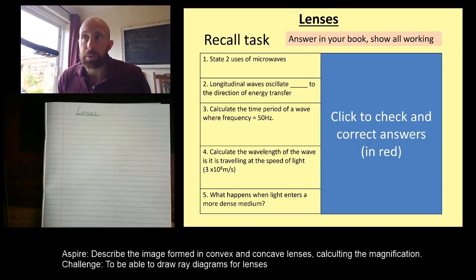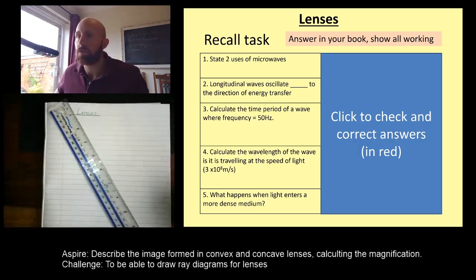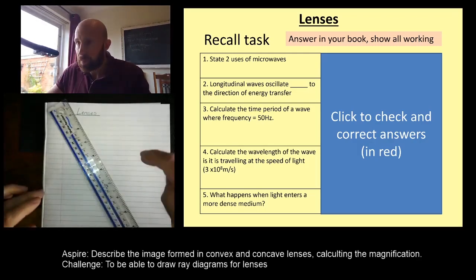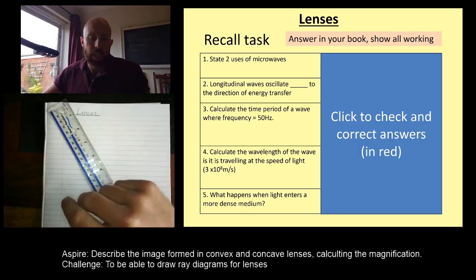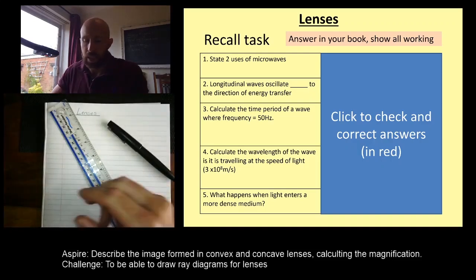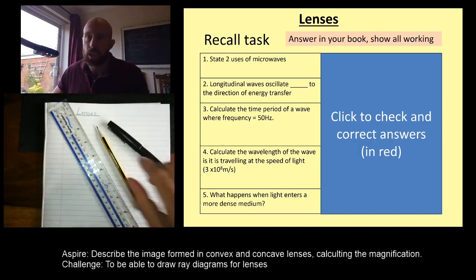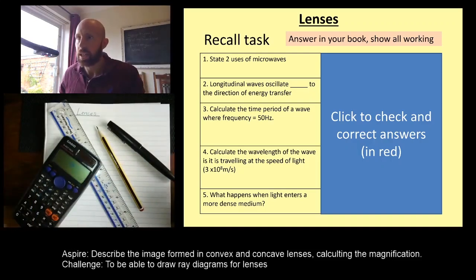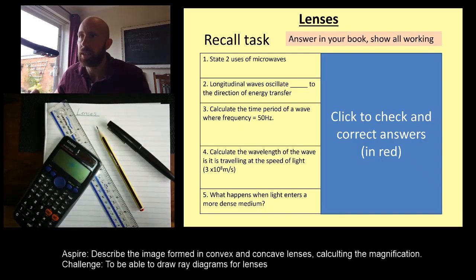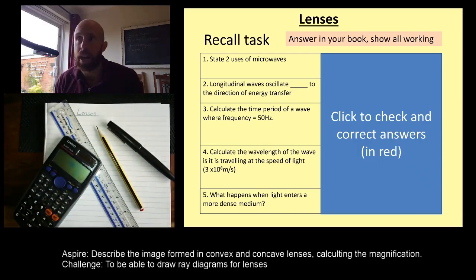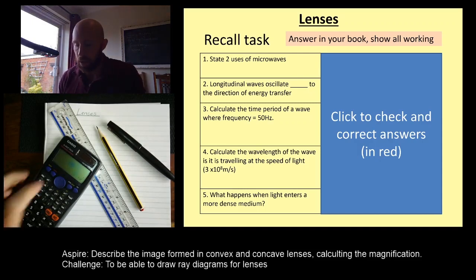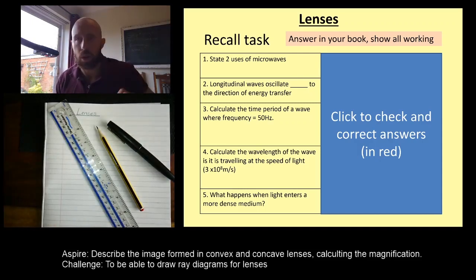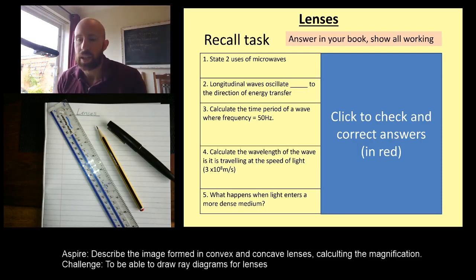You're going to need a couple of things before you start. You're going to need yourself a ruler, some paper, a pen, a pencil, and a calculator. If you haven't got a calculator, I recommend you download a scientific app to your phone. There are quite a lot floating around on the App Store or on Google Play, and you can find yourself a decent scientific calculator.